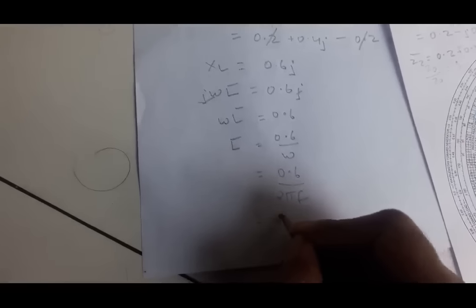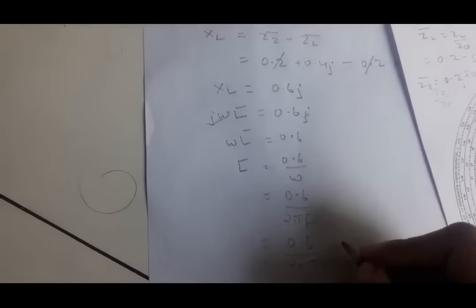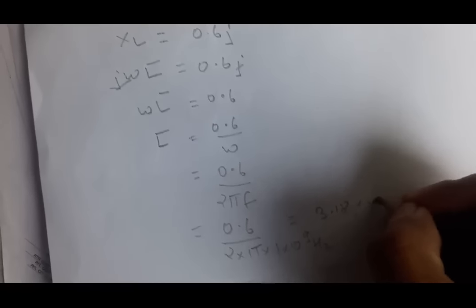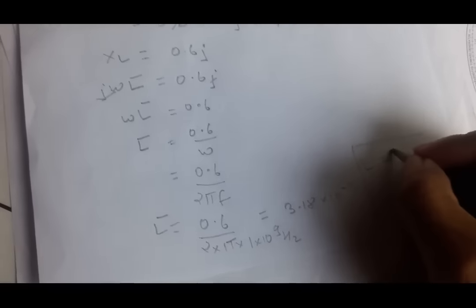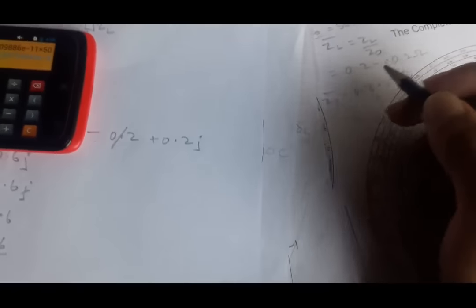Computing this gives L̄ ≈ 3.18×10⁻¹¹. To find the actual inductance, multiply by Z0: L = L̄ × Z0 = 3.18×10⁻¹¹ × 50 ≈ 1.59×10⁻⁹ H, which is 1.59 nanohenry.